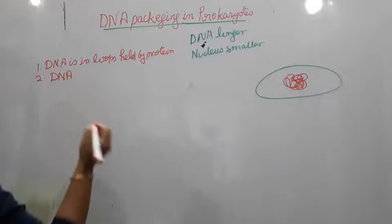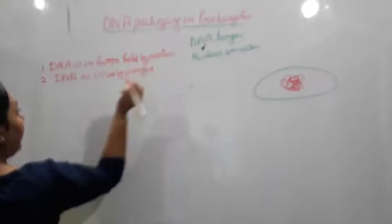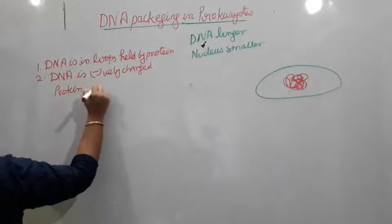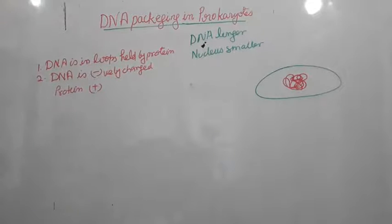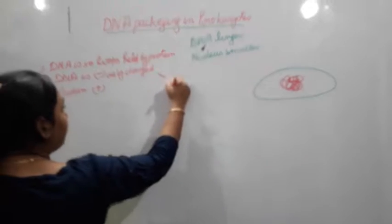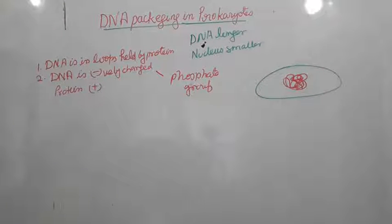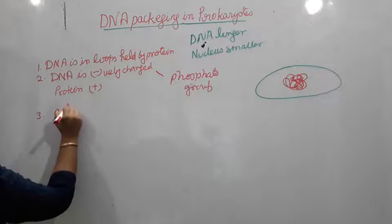As we have seen in our previous video, DNA is negatively charged whereas protein is positively charged. You may have a question: how is DNA negatively charged? The answer is that DNA is negatively charged because of the phosphate group present in it. It has a special phosphate group which makes it negatively charged. Since DNA is negative and protein is positive, these two get attracted towards each other.